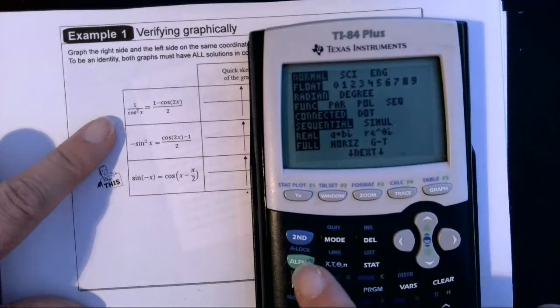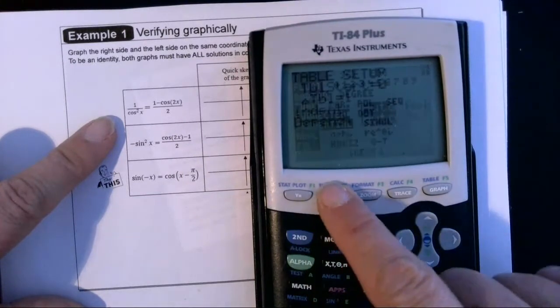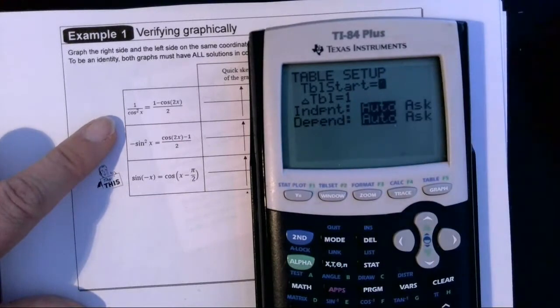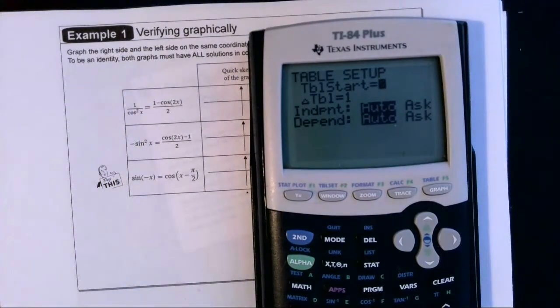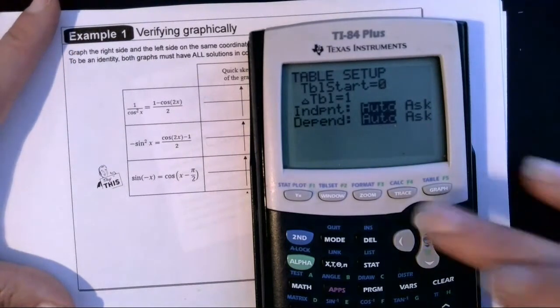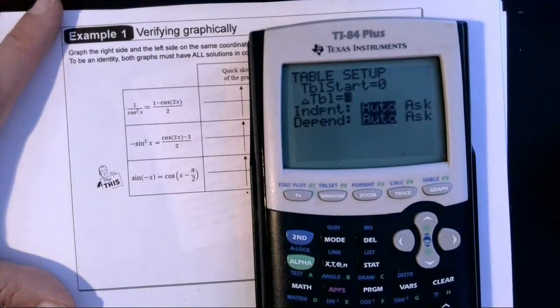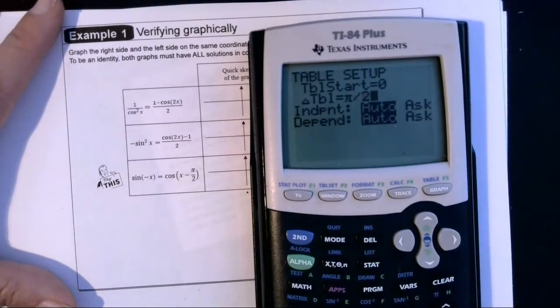And then we're also going to change our table settings because normally the table is set to start at zero and increment in ones—one, two, three, four. But since we're doing radians and we're working from a unit circle for these circular trig functions, we're going to change this instead of going in increments of one in the table, we're going to go in increments of pi over two, because those are our quadrantal angles.